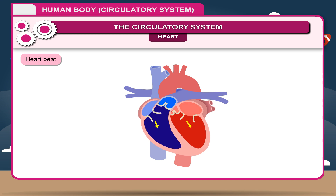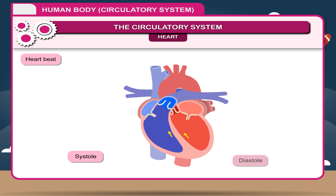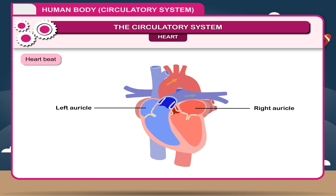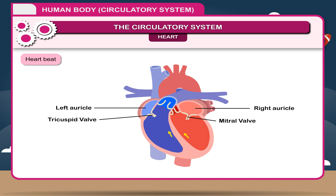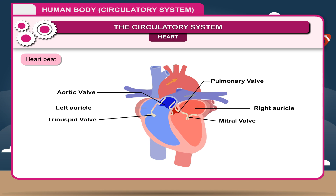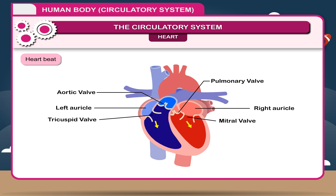There are two stages in each heartbeat cycle: the systole and the diastole. In diastole, the heart muscle relaxes and blood is drawn into the two auricles. Rising pressure in each auricle opens the tricuspid and mitral valves, and blood flows into the ventricles. Each auricle contracts, filling the ventricles to full capacity. During the systole stage, the filled ventricles contract and the mitral and tricuspid valves close. The aortic and pulmonary valves are forced open and blood pushes out into the arteries. Then the heart relaxes, the aortic and pulmonary valves close, and diastole starts again.